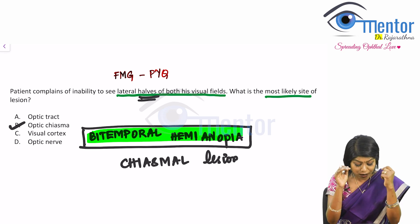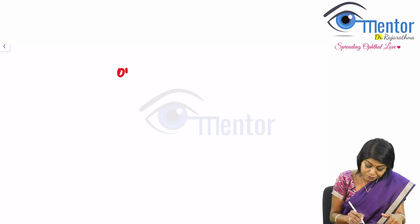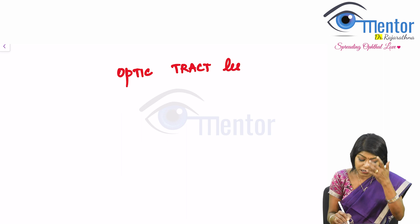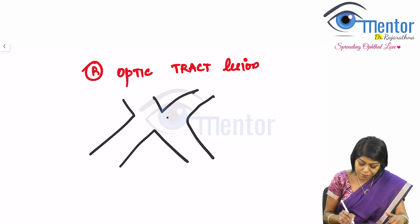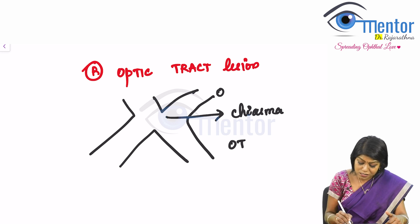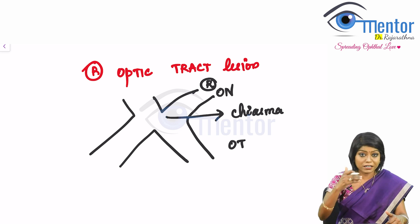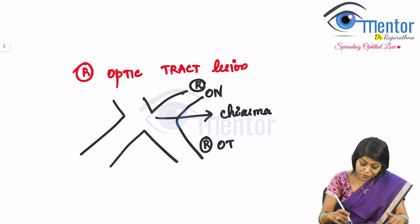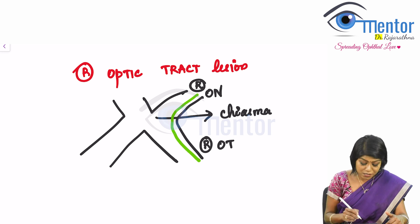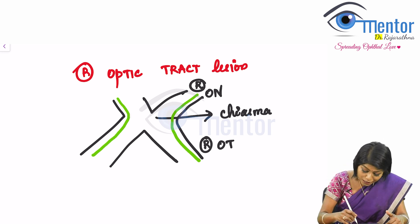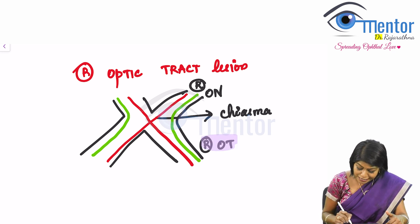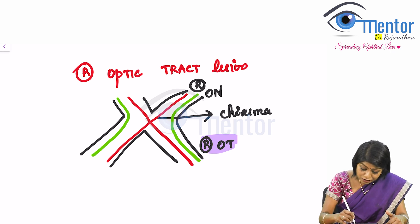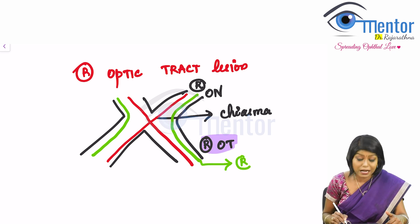Now let us look at the optic tract, visual cortex, and optic nerve as well. When we talk about an optic tract lesion — let's say the right optic tract — what structures are present? There is the chiasma, the optic tract, and the optic nerve. The temporal fibers go uncrossed, but the nasal fibers cross over at the chiasma. So in my right optic tract, I am going to have the uncrossed right temporal fibers.